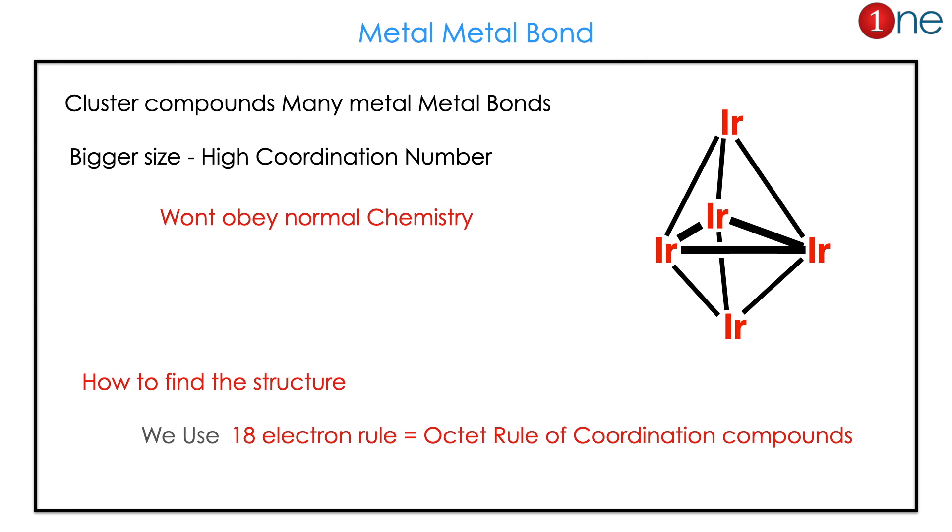Why do we need a special calculation? Because cluster compounds have many metal-metal bonds due to their bigger size and higher coordination number, they don't obey normal chemistry.